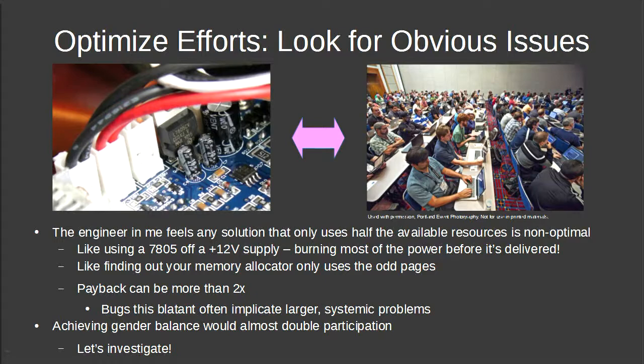I want to address this issue personally — when I walk up to people and say I'm doing something with DRM, DMCA, or open source hardware, people look at me blankly. As an engineer, I want to optimize, so I look for obvious problems. If someone's got a battery life issue and they have a linear regulator dropping from 12V to 5V — losing half their power — fix that first.